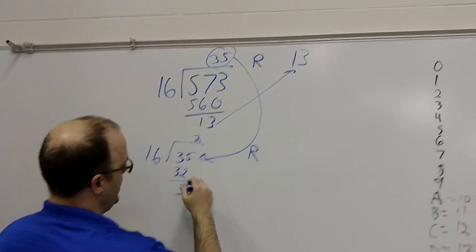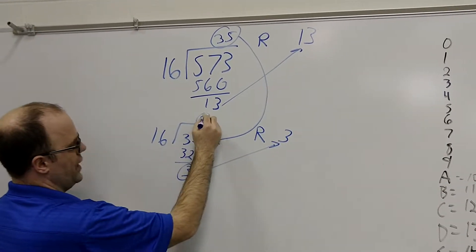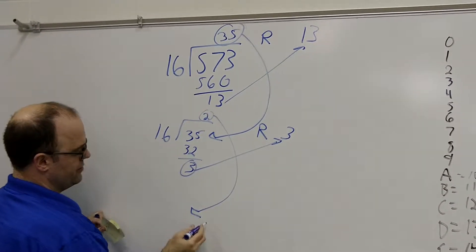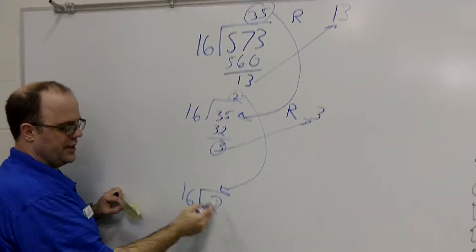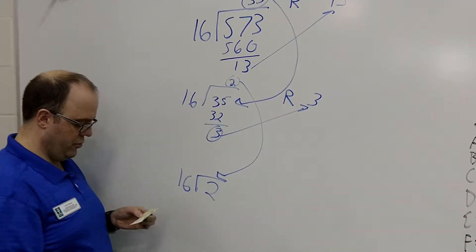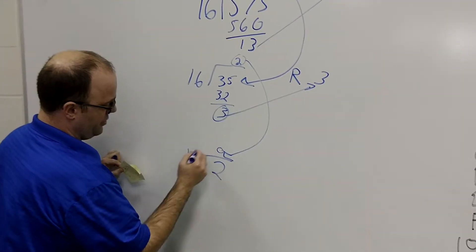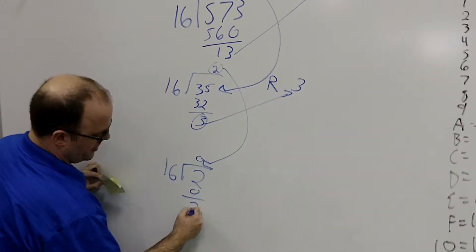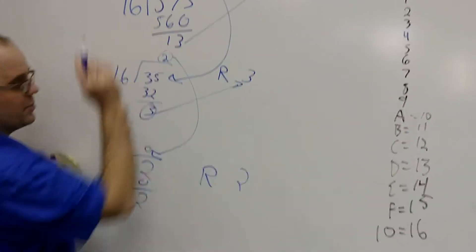So once again, remainder goes here, and I take this value down to here. And then I do long division one more time. 16 divided by, 16 goes into 2, 0 times. And if I do that, 0 times this will give me 0, and it gives me a remainder of 2. And now I'm complete.